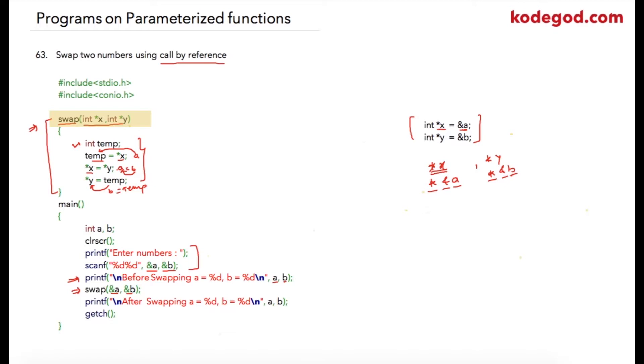And a function to which we are passing address locations of our variables, and in that function we are using integer pointers which will be pointing to these locations, we are able to swap two numbers. So this statement gets completely executed.